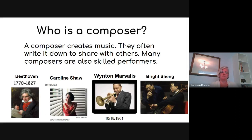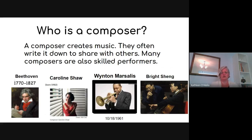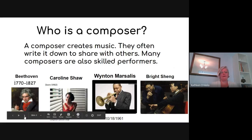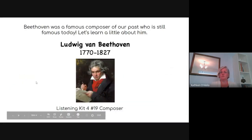We have listed on this chart: Beethoven, who is the composer of Moonlight Sonata — he thought of it originally, he was the one who came up with it. Caroline Shaw is another famous composer, Wynton Marsalis, Bright Sheng. We have a lot of composers pictured here from the past and from the present. Beethoven was a famous composer of our past who's still famous today.